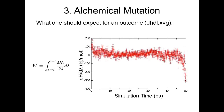After running an alchemical mutation simulation — here for 50 picoseconds — you get an extra output file called dHDL.xvg. By integrating dH/dλ over the full range of lambda, we obtain a work value. From multiple such transitions we build a work distribution, from which we can estimate the delta G for the mutation.